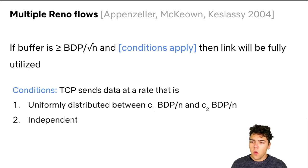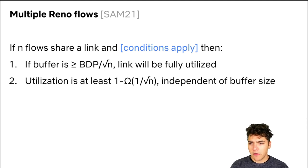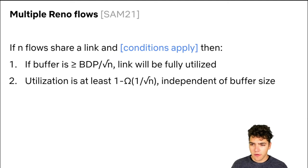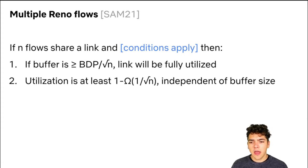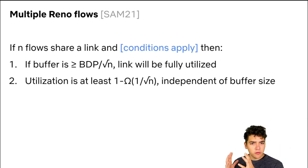So our question was: what is it about TCP, especially TCP Reno, that allows this rule to hold? We were able to prove the following: if n flows share a link and some conditions hold, then provided the buffer is at least BDP over the square root of n, the link will be fully utilized — recovering the usual square root of n rule. We also go further and show that no matter what buffer size you have, utilization will always be at least 1 minus something like 1 over the square root of n.